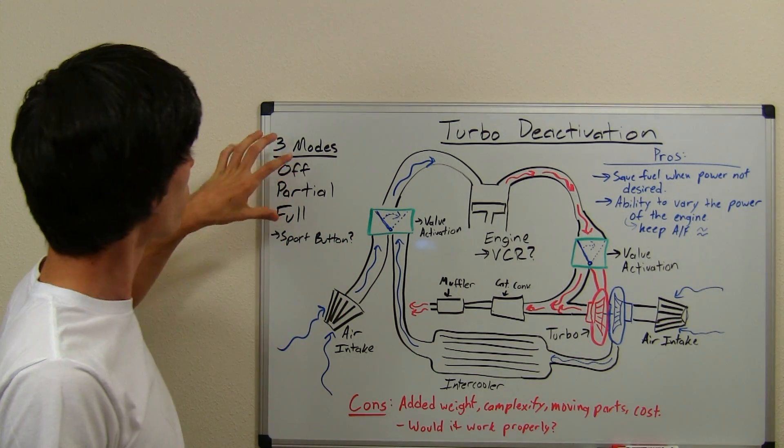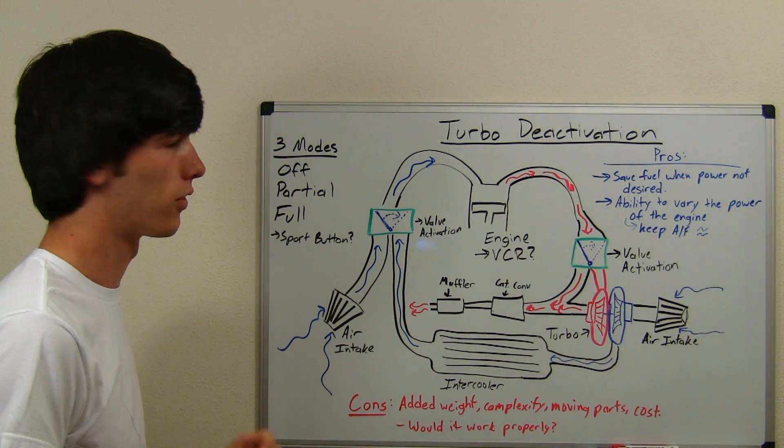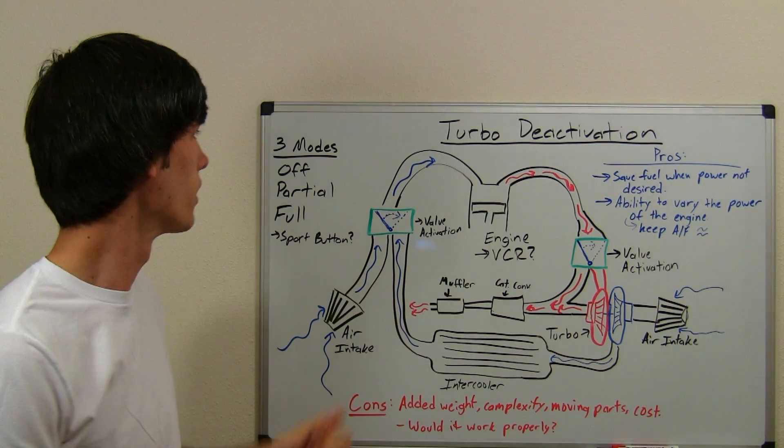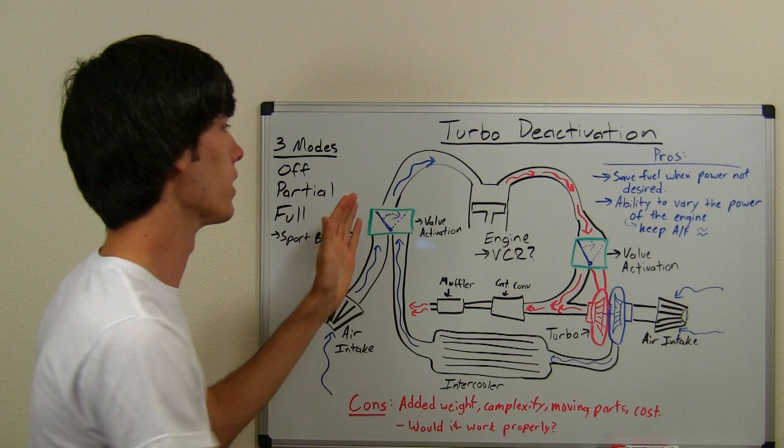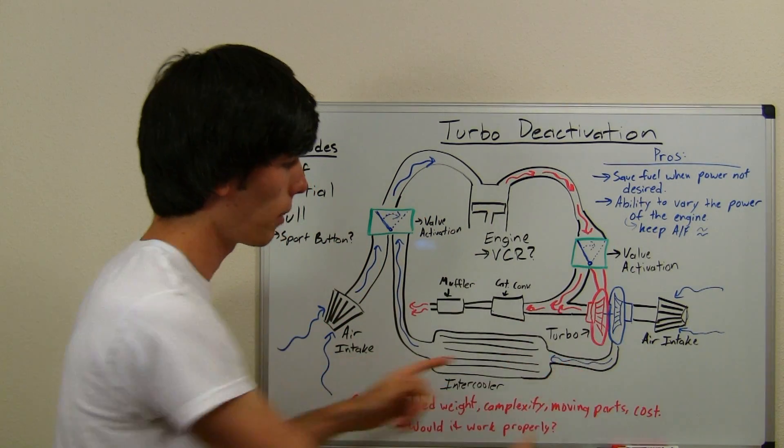I would recommend implementing three modes. You'd have a little sport button that you can push, and you can be in modes 1, 2, and 3. Mode 1 being off - that would mean your valves are closed, you just use the regular intake, and you bypass the turbo.